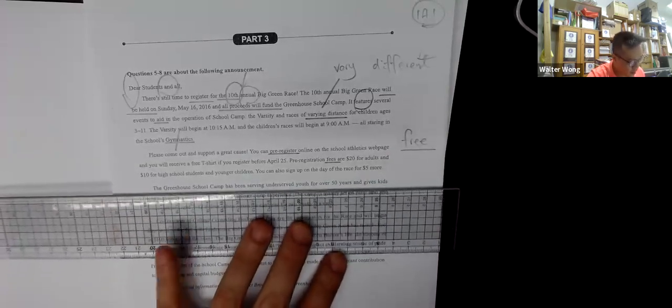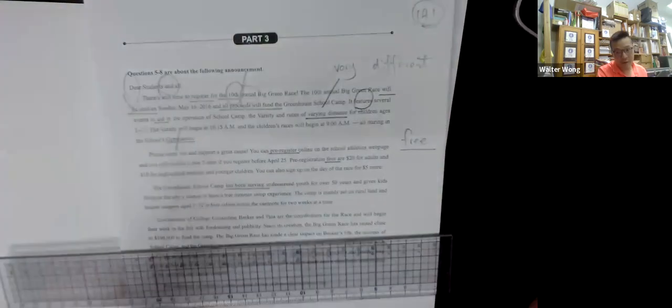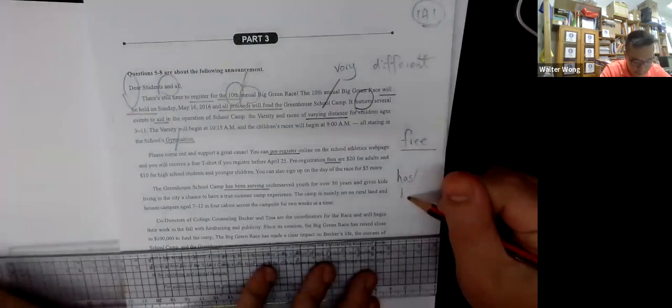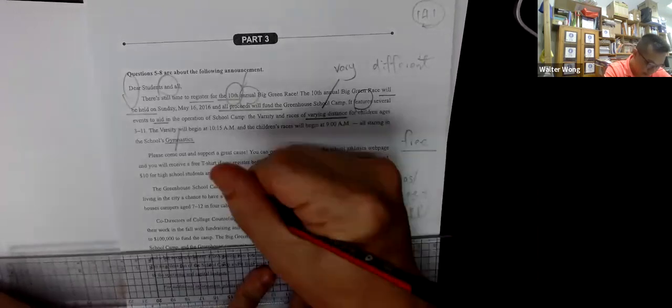The greenhouse group camp has been serving. This is present perfect continuous, and present perfect continuous and present perfect is the same.